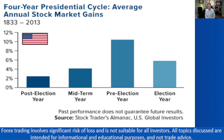The last slide I want to touch on talks about the four-year presidential cycle. Going back almost 200 years now to 1833, we've generally seen middling performance in the first and second year of a president's tenure. But then in the pre-election year, the thesis is that they're spending a lot of money, injecting money into the economy so that it's strong, so that they or their party is more likely to get reelected. That's where we see really strong performance — usually in the third year of a presidential cycle — and that does carry over to an extent into the election year, where we are as I'm speaking.